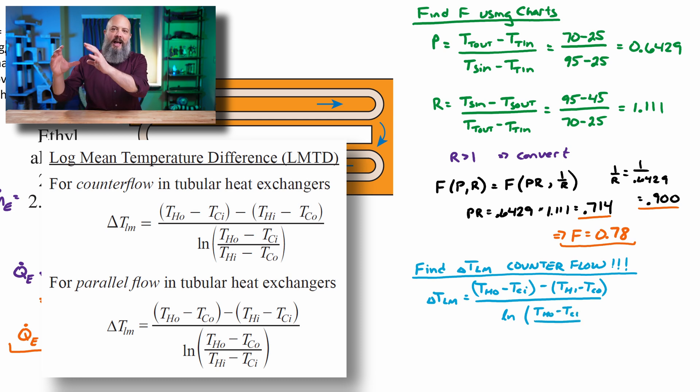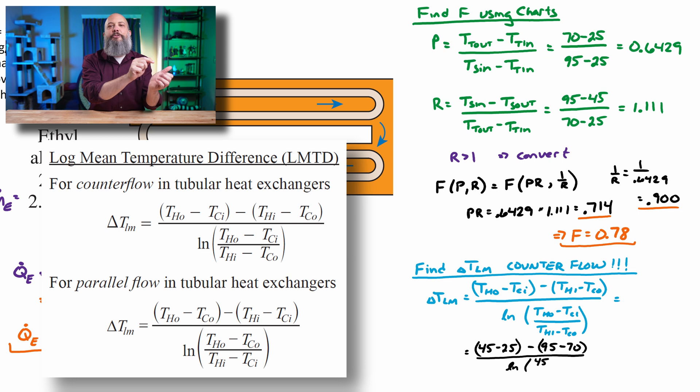the one that has T_hot,out minus T_cold,in because the hot outlet, the 45, is close to the cold inlet of 25 and T_hot,in minus T_cold,out because the hot 95 degree water inlet is right next to the hot 70 degrees ethyl alcohol outlet.